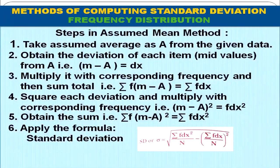After the actual mean method, we discuss the assumed mean method for frequency distribution. The steps remain the same as for discrete series, but mid values are also obtained and deviations are taken from the assumed mean using mid values. We find Σfdx and Σfdx², then apply the formula: σ = √(Σfdx² / n − (Σfdx / n)²).